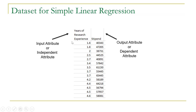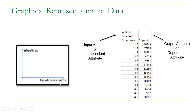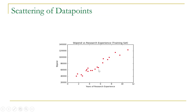In this case, our input attribute will be research experience and the output attribute is stipend. Here stipend is the dependent attribute whose value depends upon the research experience. We can plot these values on a graph by plotting research experience on the x-axis and stipend on the y-axis. Our objective will be to predict the value of stipend on a given value of research experience. By scattering these data points over x and y axes, you can see that these data points actually indicate the value of experience for this machine learning problem.